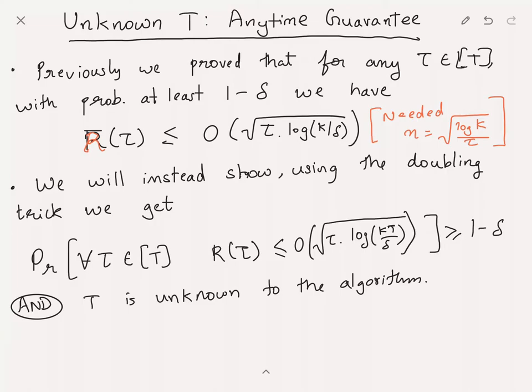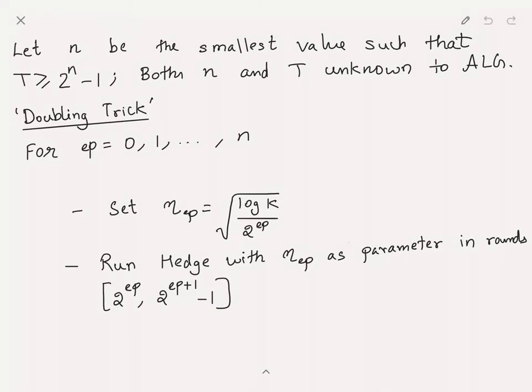Our goal is to see how to get regret of this form. The strategy is fairly natural. Let n be the smallest value such that T is greater than 2^(n-1) — so n is essentially the log of the largest power of two below T. Here both n and T are unknown to the algorithm.